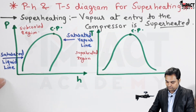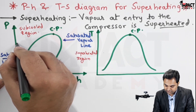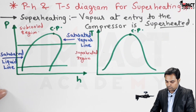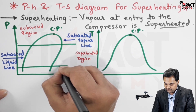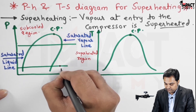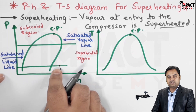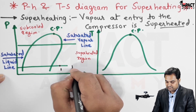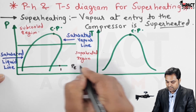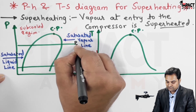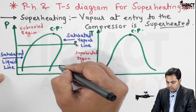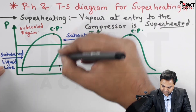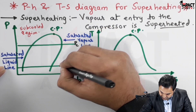First, draw two horizontal lines indicating constant pressure. Since point one is superheated, it would be in the superheated region. At entry to the compressor the pressure is low — that is evaporator pressure, denoted as P_E at the bottom. The upper line is the condenser pressure, P_C, the higher pressure. Since the vapor is superheated at entry to the compressor, after compression it is superheated further and the pressure increases.